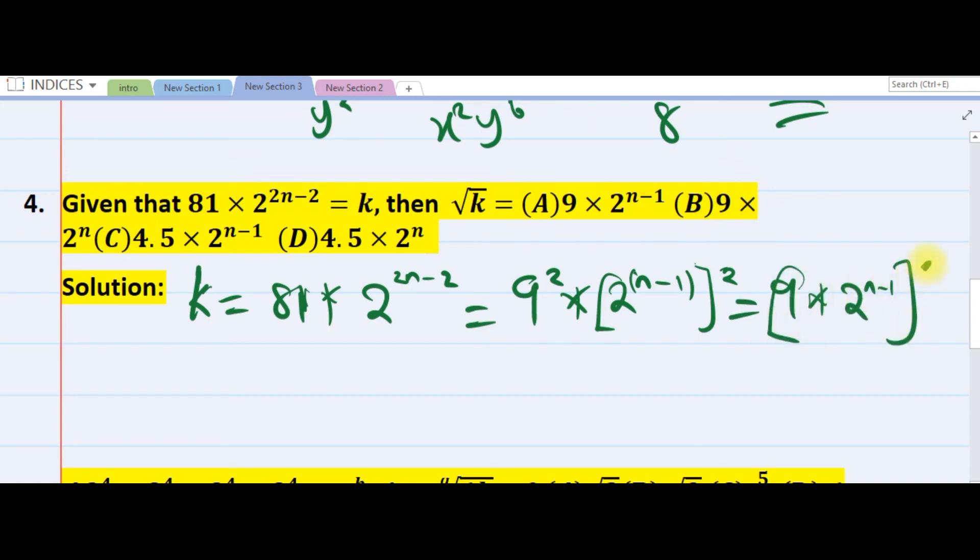So the square goes here to be square root, and my answer is 9 times 2 raised to power n minus 1. So my answer is A.